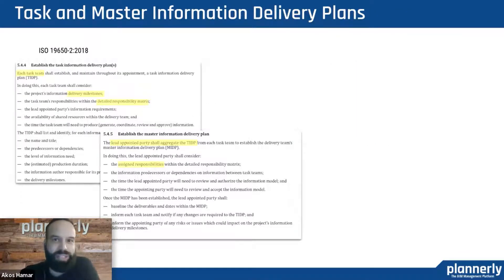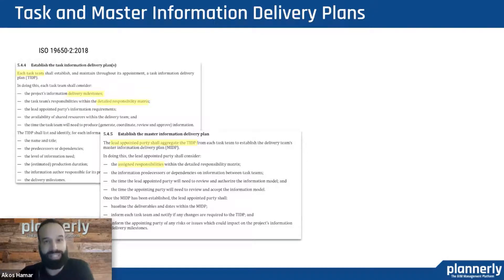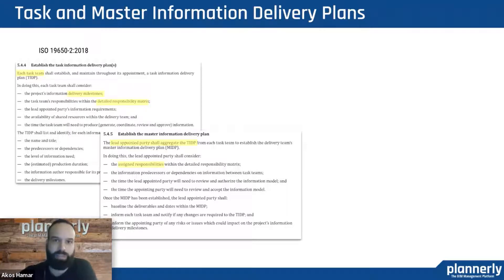TIDP and MIDP — the task and master information delivery plan. To put it simply, this is a task list. Each task team assigned a certain activity puts together their to-do list and documents how they are going to execute and carry out those tasks — that's the task information delivery plan. The lead appointed parties, the ones in charge of bringing things together, assemble what's called a master information delivery plan — a set of task information delivery plans combined. That's going to be the way of carrying out the project in the end.